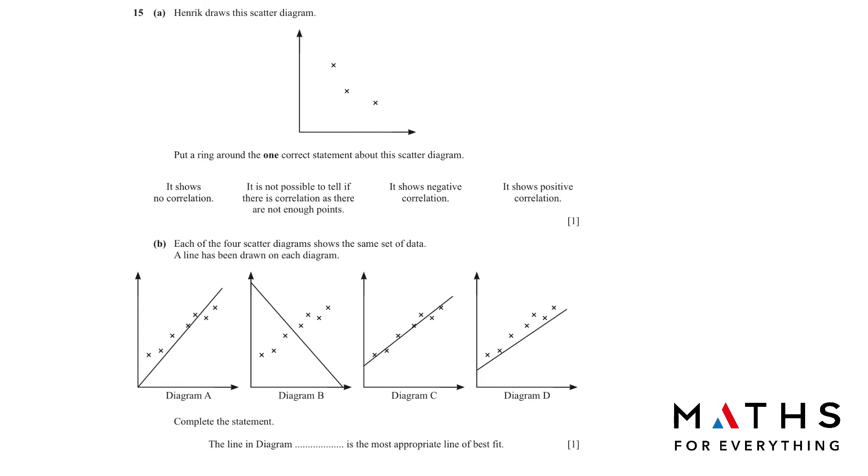Question number 15: Hendrik draws a scatter diagram. Put a ring around the one correct statement about the scatter diagram. It shows no correlation, it is not possible to tell if there is correlation as there are not enough points, negative correlation, or positive correlation. Let's start with no correlation. No correlation will be very random points like this. Negative correlation will be going down only, the points. Positive will be the points are going to go up.